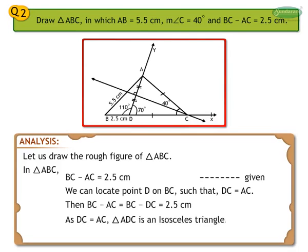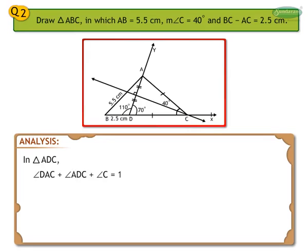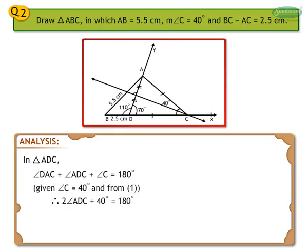As DC is equal to AC, triangle ADC is an isosceles triangle. Therefore, angle DAC is equal to angle ADC — statement 1. The sum of the angles of a triangle is 180 degrees. Therefore, in triangle ADC, angle DAC plus angle ADC plus angle C equals 180 degrees. Since measure angle C equals 40 degrees and from statement 1, we get 2 times angle ADC plus 40 degrees equals 180 degrees. Therefore, 2 times angle ADC equals 140 degrees, so angle ADC equals 70 degrees.